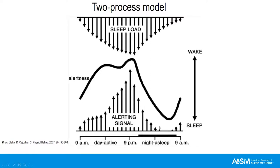There are two notable points in alertness within this model. In the afternoon there's a 'circadian dip' — more accurately a two-process model dip — where drowsiness occurs because the homeostatic sleep drive is high but the circadian alerting signal hasn't mounted enough to fully oppose it. Additionally, just before the alerting signal drops and melatonin begins, there's a peak called the 'forbidden zone for sleep,' where the circadian alerting signal overshoots the homeostatic sleep drive. When working appropriately and without sleep deprivation, this results in 16 hours of consolidated wakefulness and 8 hours of sleep.